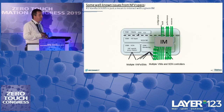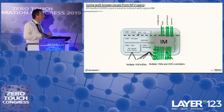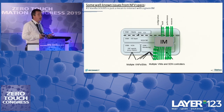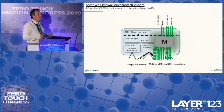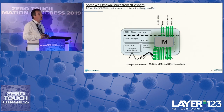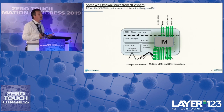Another issue is that ETSI NFV has created SOL003 as a way to interact with a given information model, but it says nothing about how the information model itself should look. As a result, every vendor can claim compliance with SOL003 while having their own information model. How is a service provider supposed to have an orchestrator using a different information model for every vendor? How do you combine network services and network slices with multi-vendor products? You cannot do that. That is the current reality of standards.